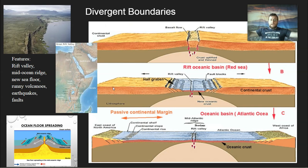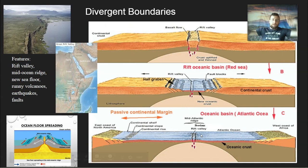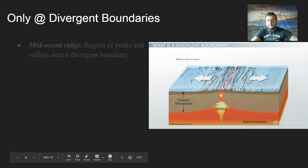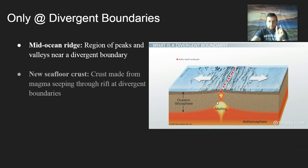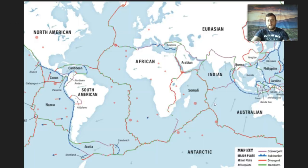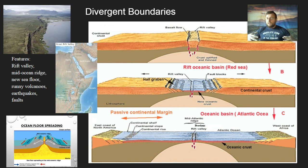Over long periods of time, that rift will develop into a large ocean basin like the Atlantic Ocean, which separates South America from Africa and North America from Europe. In the middle of that ocean you get a mid-ocean ridge, where the separating plates crumble creating peaks and valleys. Inside the mid-ocean ridge at the center, new seafloor forms from rising lava that solidifies right in that rift valley. Because of movements, you'll also have fault lines and earthquakes there. The volcanoes here tend to have very runny lava coming straight from the mantle, so they're not as explosive.